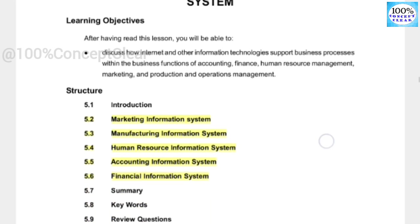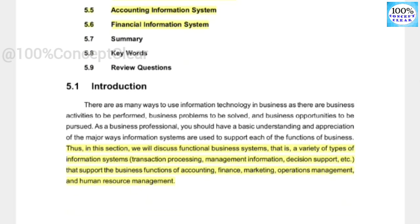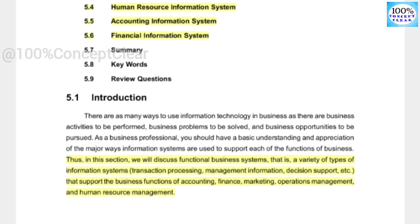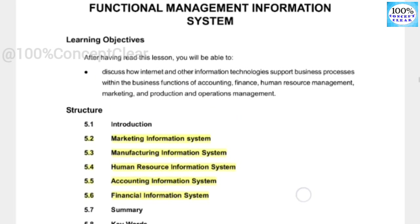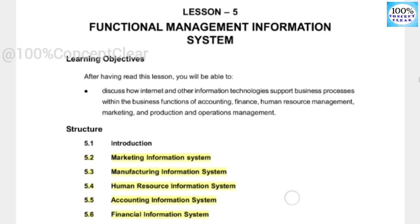What is it? In this section, we will discuss functional business systems — a variety of types of information systems that support the business functions of accounting, finance, marketing, operational management, and human resource management. Our business has a lot of functions, and in all these functions, we will see how the management information system works.